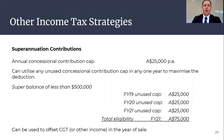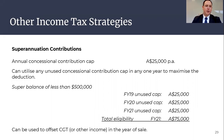In addition to managing borrowing levels and investment to achieve tax optimisation, there are strategies relating to superannuation that can further reduce your Australian tax obligations. Certain contributions to superannuation can also be claimed as tax deductions to further reduce your tax obligations. These are referred to as concessional contributions and allow you to use the tax credit similar to that of the tax deductible expenses we discussed previously.